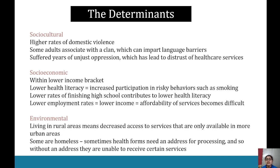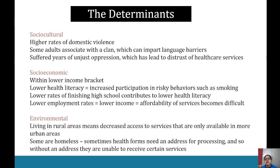Lower education contributes to lower employment rates, which equals lower income and results in a lack of ability to afford health services — for instance, gym memberships or the option to buy organic and healthier foods. For environmental determinants, they are more likely to be living in rural areas, meaning decreased access to services only available to people in urban areas. Some are homeless, and health forms sometimes need an address for processing, so without an address they're unable to receive certain services.